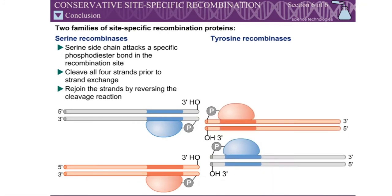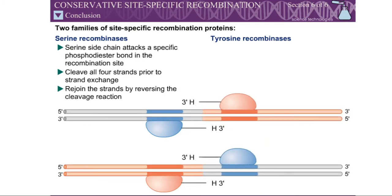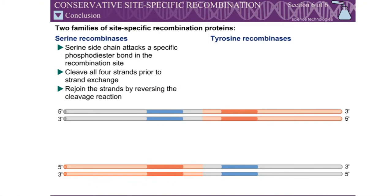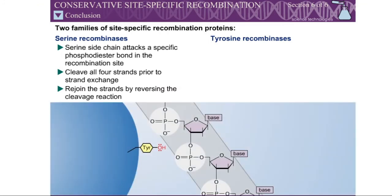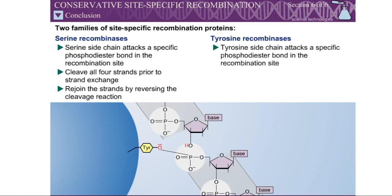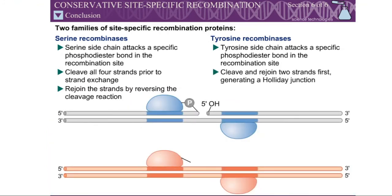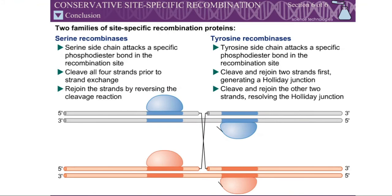The DNA strands can be rejoined simply by reversing the cleavage reaction. Tyrosine recombinases use a very similar mechanism to that of serine recombinases, except a tyrosine side chain is involved in the cleavage reaction rather than a serine side chain. The tyrosine recombinases cleave and rejoin two DNA strands first, generating a Holliday junction. The other two tyrosine recombinases then cleave and rejoin the other two DNA strands, resolving the Holliday junction.